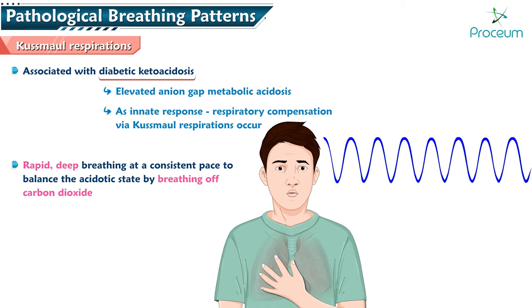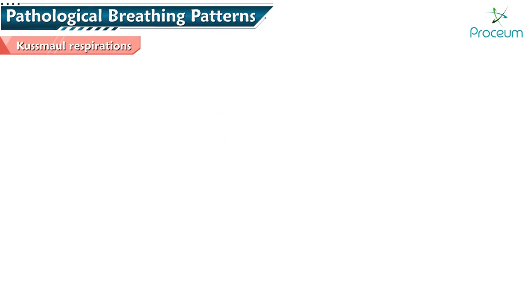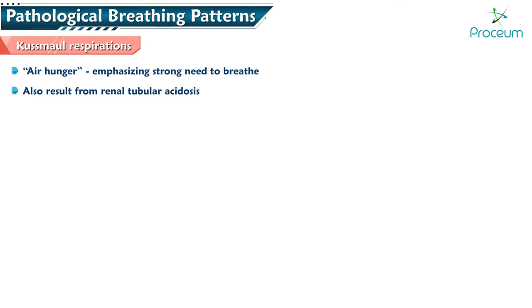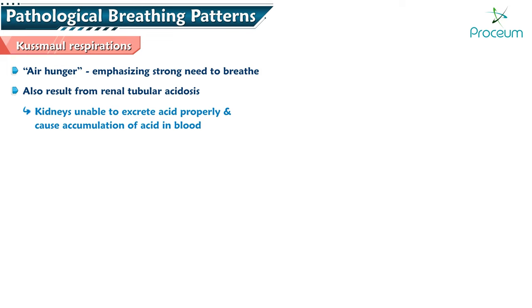Kussmaul respirations are occasionally described as air hunger, emphasizing the strong need to breathe. Kussmaul respirations may also result from renal tubular acidosis, when the kidneys are unable to excrete acid properly and subsequently cause an accumulation of acid in the blood.